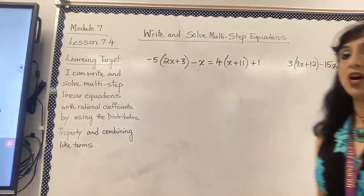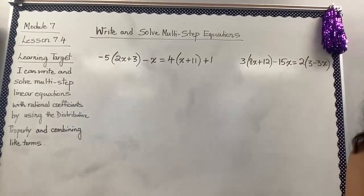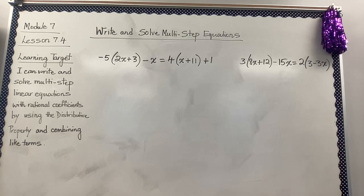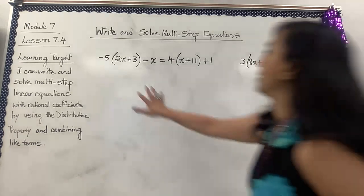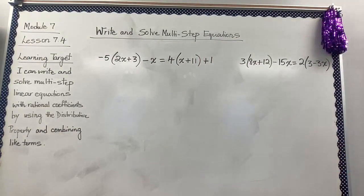I've got two equations written up on the board. Some equations contain expressions with grouping symbols on one or both sides of the equal sign. To solve equations like this, we are going to first expand the expressions that contain grouping symbols, and then solve the equation by combining like terms and using the properties of equality.